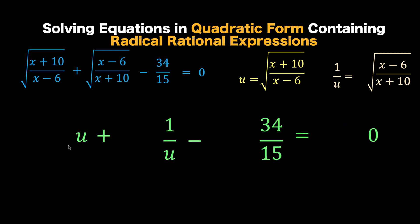So let's multiply the first term by 15u. Do the same for the second term, the third term, and the right side of the equation. Simplifying the first term, we arrive at 15u squared. And simplifying the second term, we arrive at 15. And simplifying the third term, we arrive at minus 34u, and the right side remains 0.